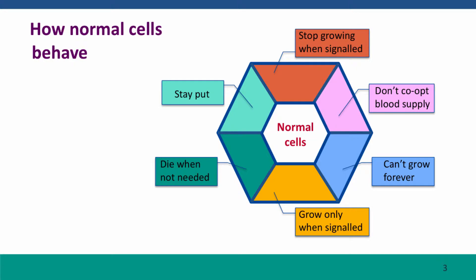Here's a diagram of how normal cells behave. They stop growing — they're very well-behaved. They stop growing when they're told to. They don't steal the blood supply to get more nutrients or more oxygen than is their fair share. They can't grow forever. They only grow when given signals to tell them to grow, and they politely die when they're not needed. And finally, they stay put — they don't wander around the body, moving into new places.